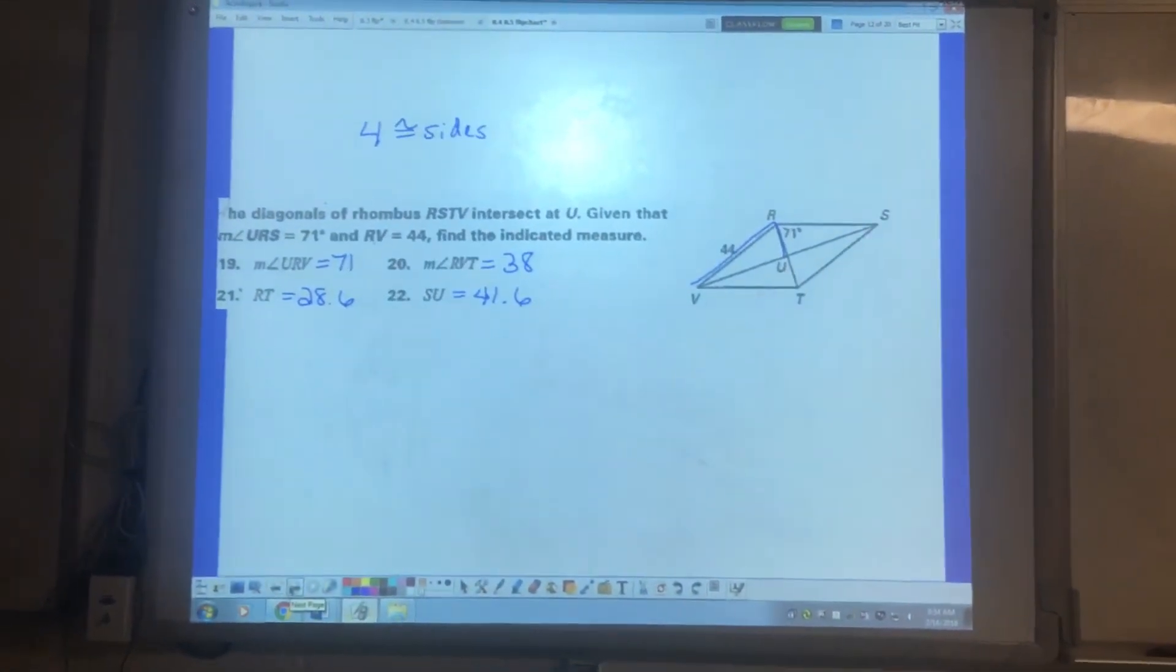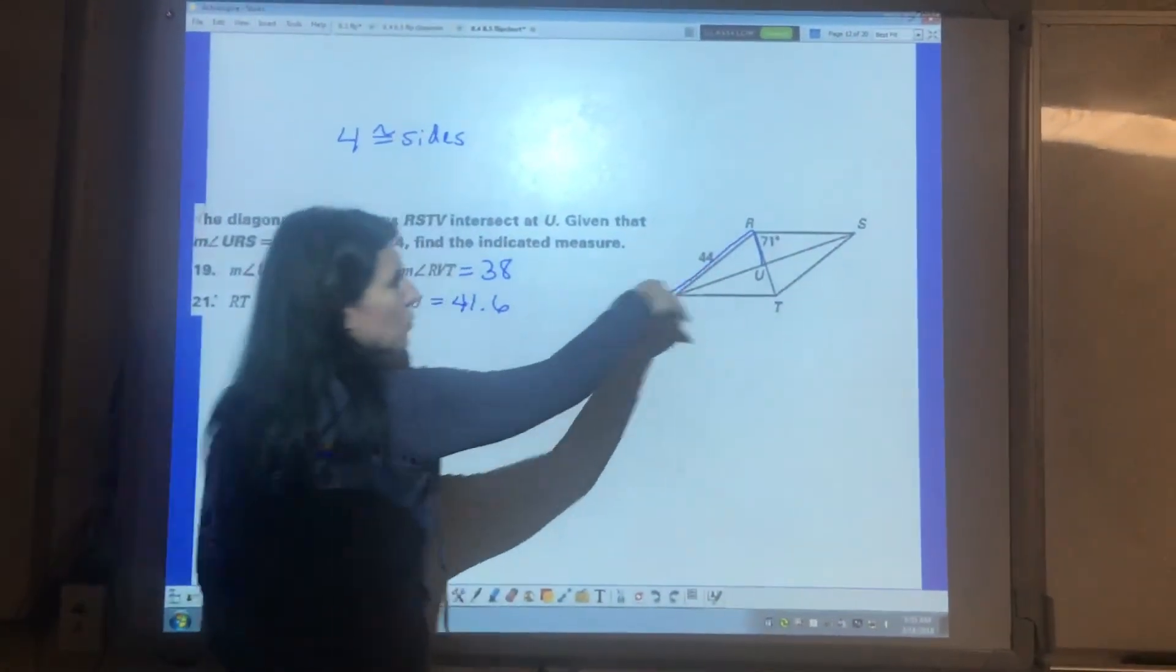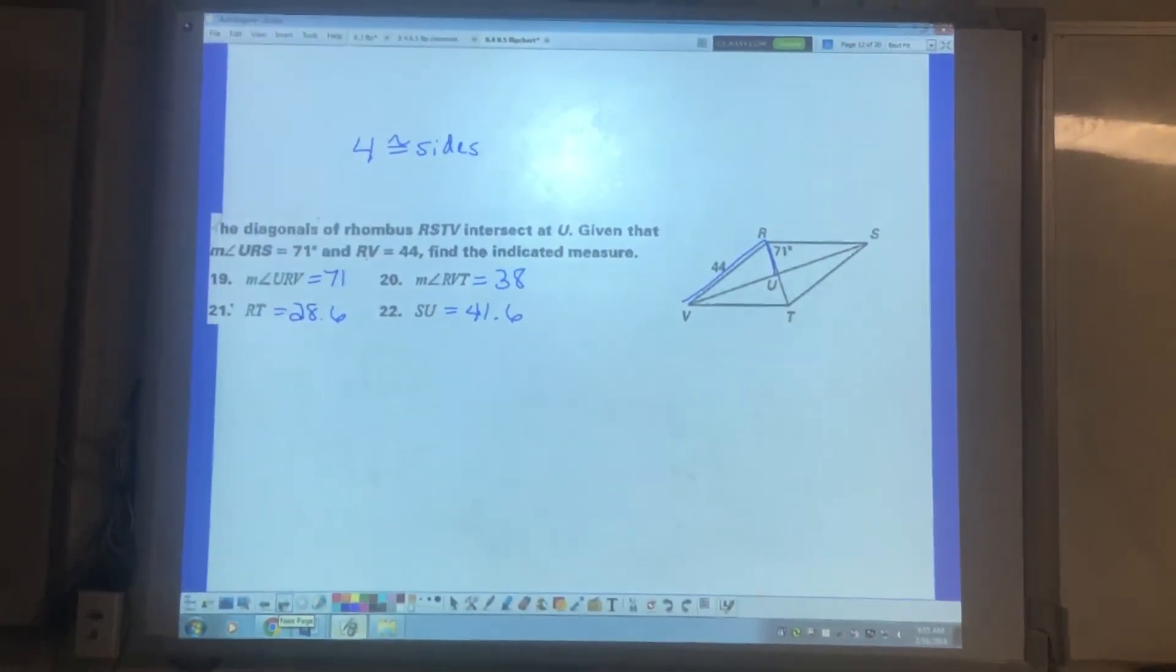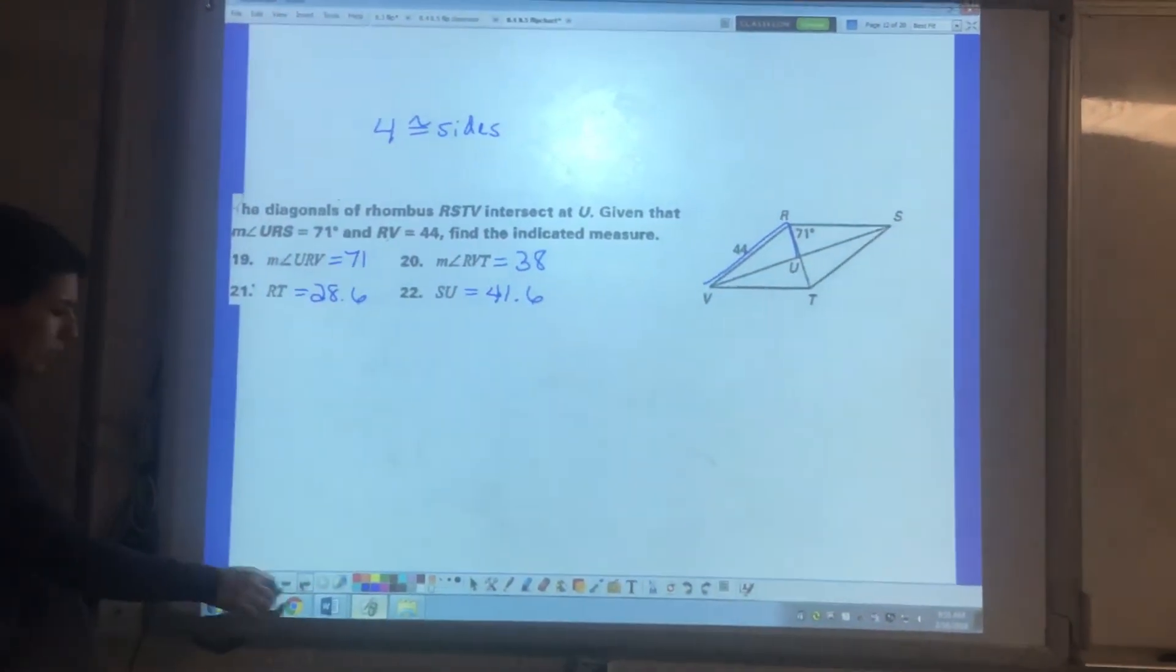Diagonals of a rhombus intersect at a point, giving you some information. It's also put in the diagram here for you. I'm not going to talk a whole lot about this one so just take a look at this one on your own.